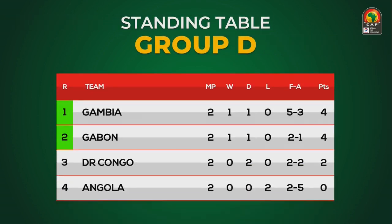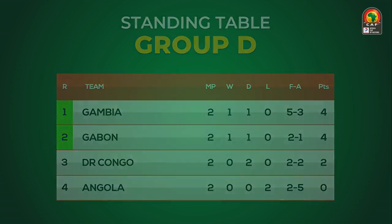In group D, the top of the table is Gambia, followed by Gabon in second, DR Congo and Angola below it.